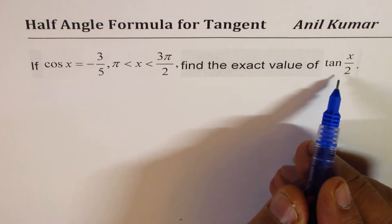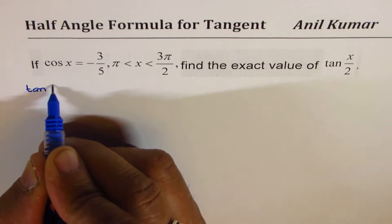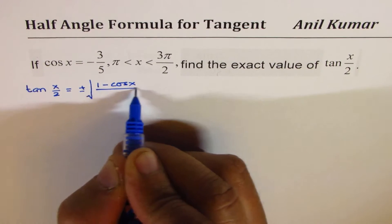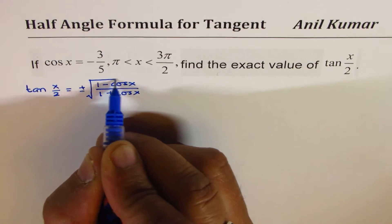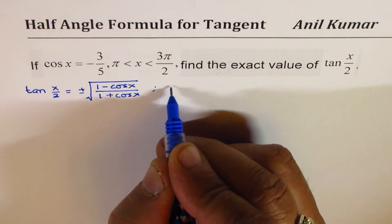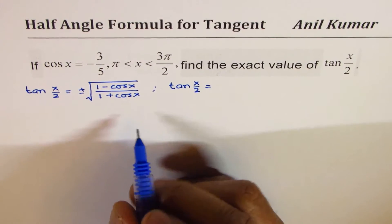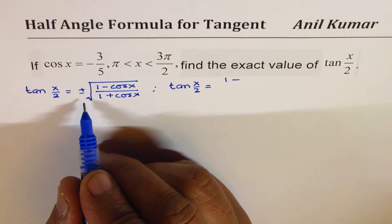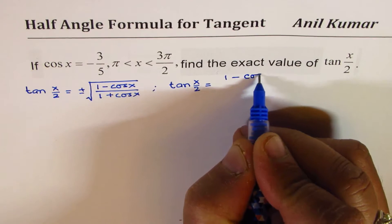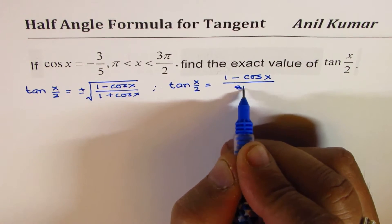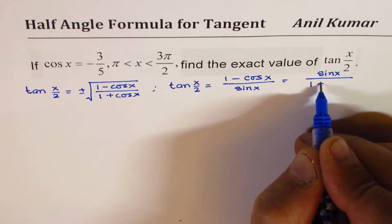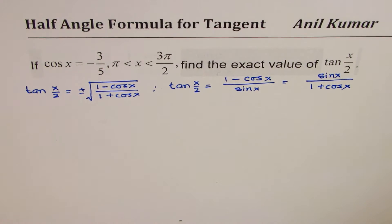We are familiar with three formulas which could be used here. One is tan x by 2 equals plus or minus square root of 1 minus cos x divided by 1 plus cos x. This formula involves plus or minus. We also have formulas which do not involve plus or minus — where you have to work out which sign to take. A better formula is 1 minus cos x over sin x, or equivalently sin x over 1 plus cos x.